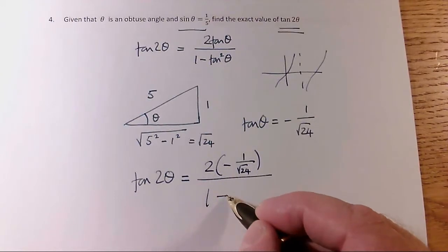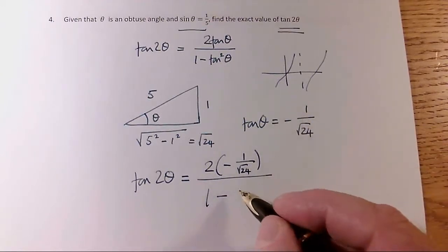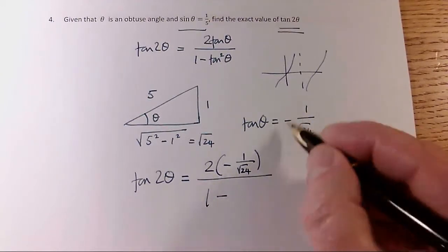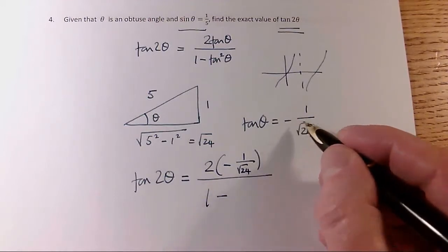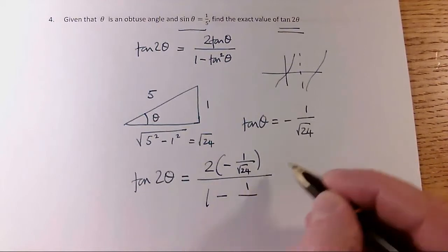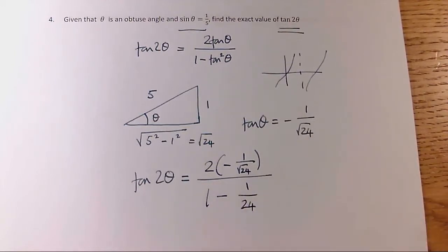over 1 minus tan² θ. Well, that squared is going to be positive because a minus squares to a plus, and 1 squares to 1, and √24 squares to 24.